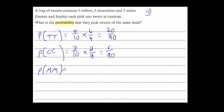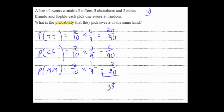For mint-mint: the first one being mint is two out of ten. Taking a mint out leaves nine sweets with only one mint, so multiply by one ninth, giving two over 90. Adding the three probabilities together: 20/90 + 6/90 + 2/90 = 28/90. Cancelling down — both divisible by 2 — gives 14 out of 45. So the probability of them choosing two sweets of the same kind is 14 over 45.